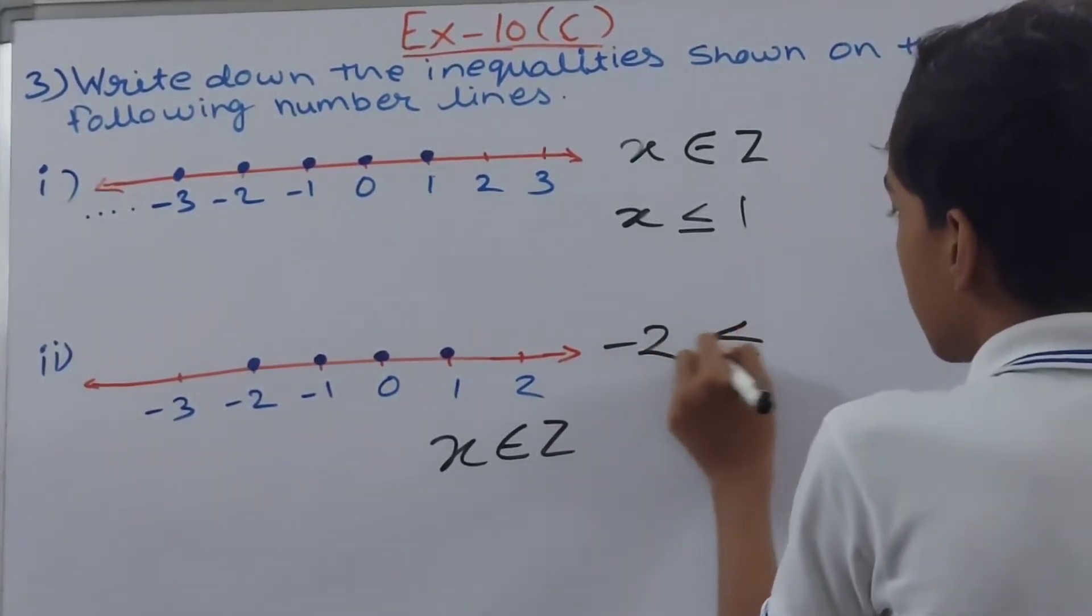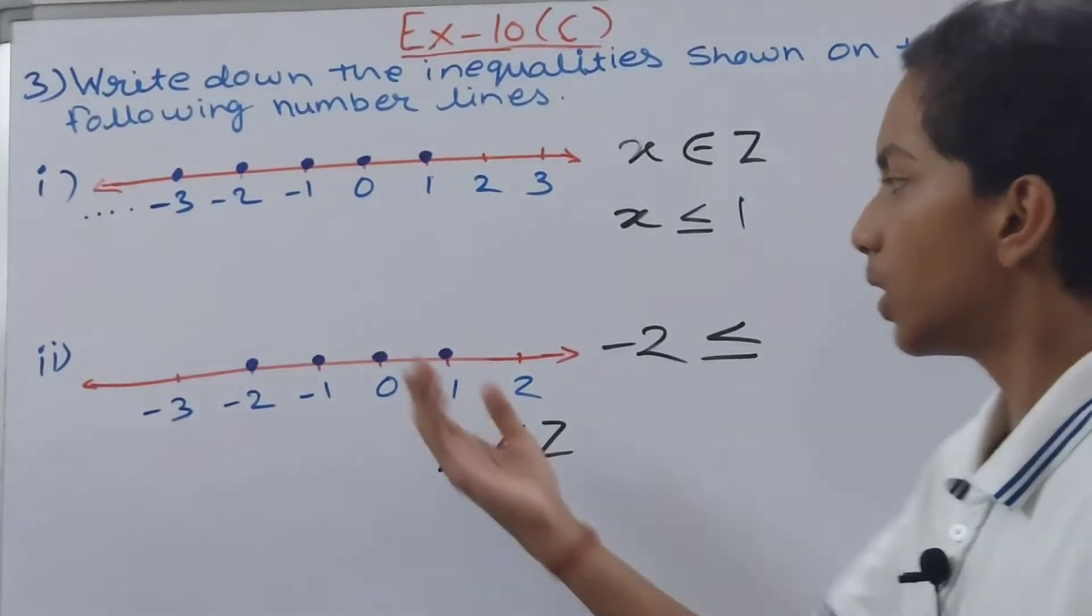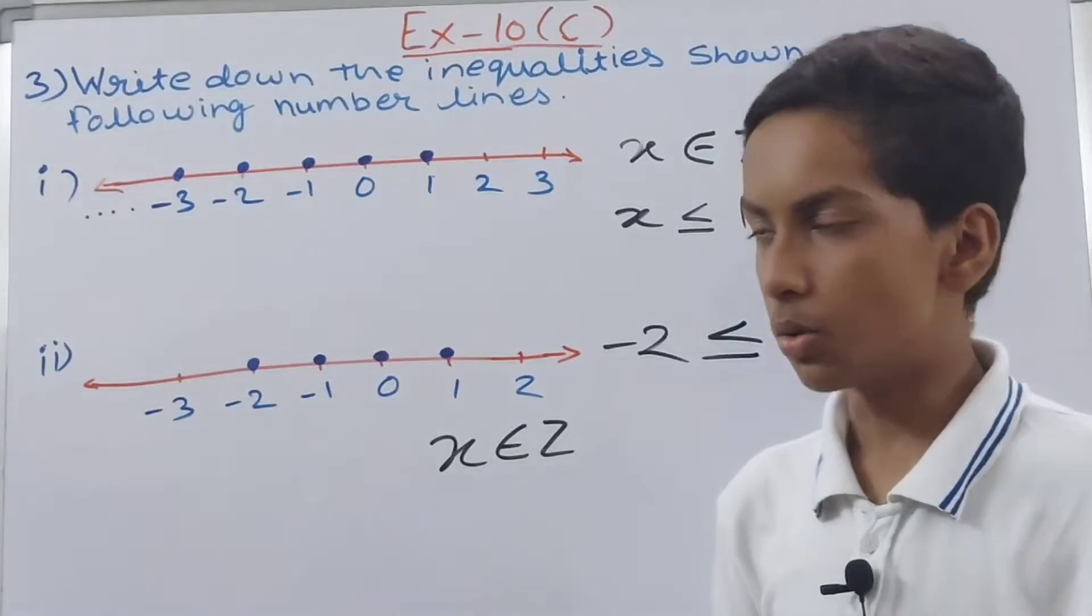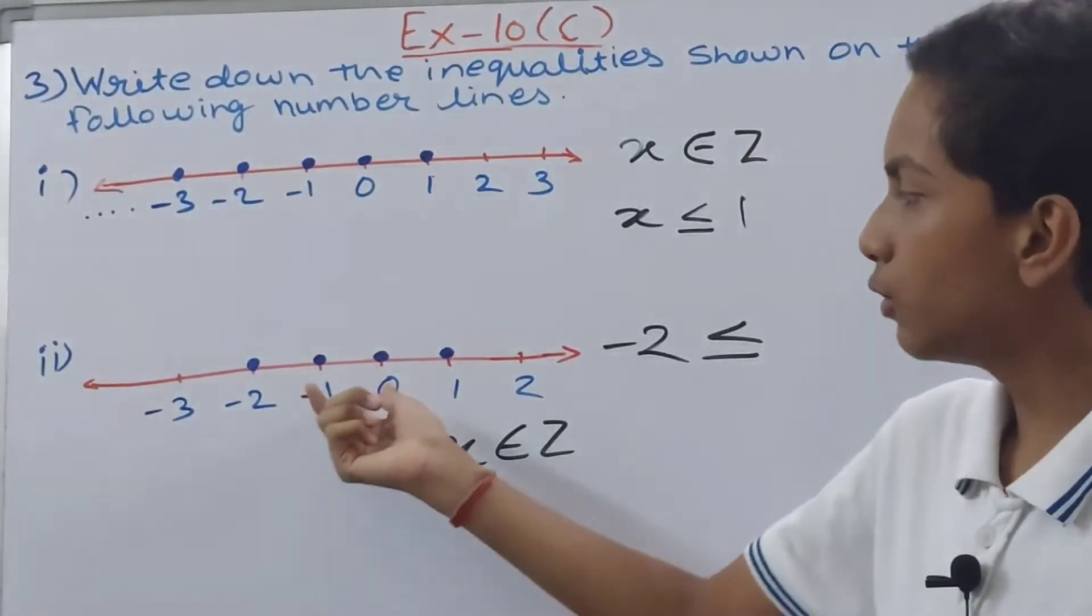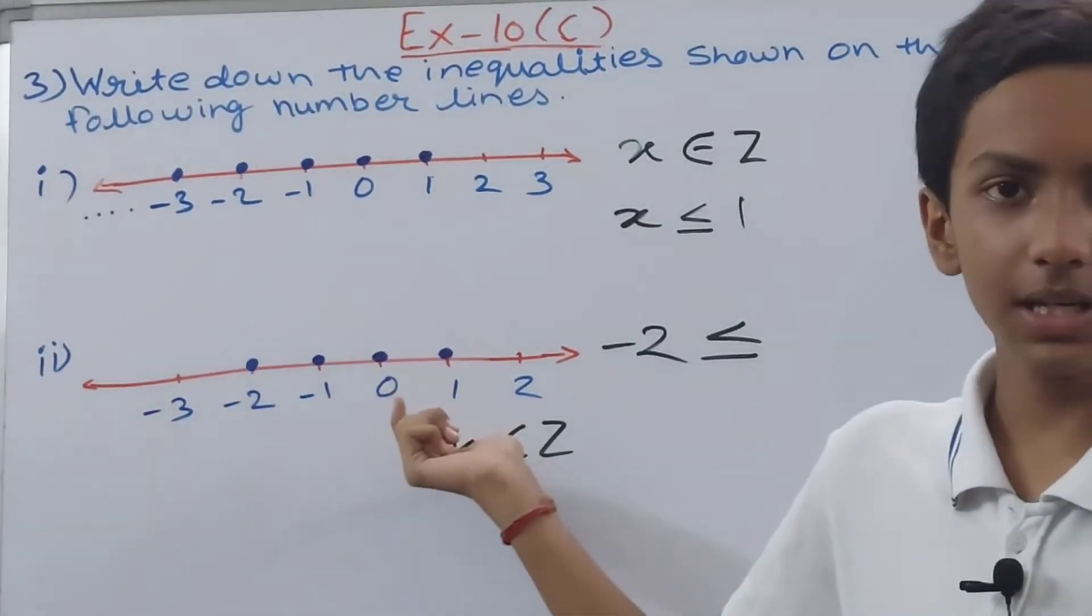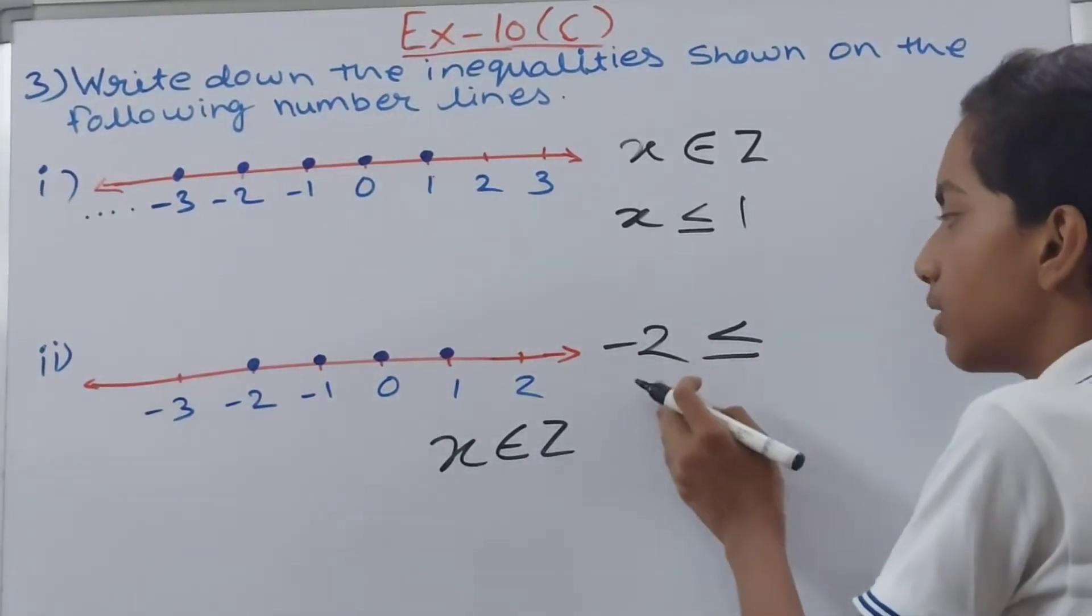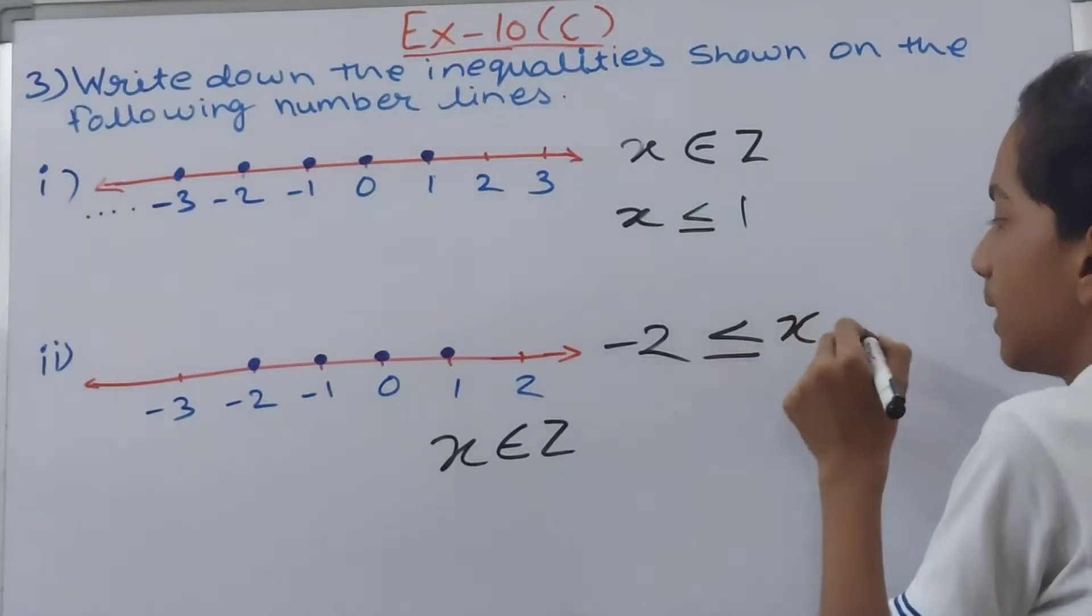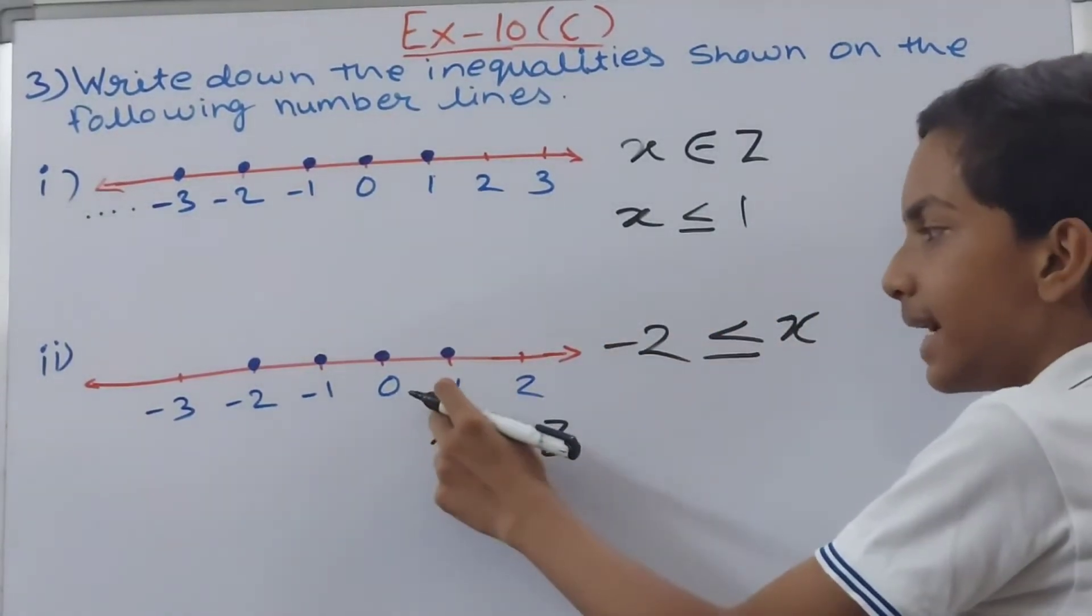Now -2 is less than or equal to... why am I writing this? Because these numbers which are after -2 are more than -2 and they have value more than -2 which is the value of x. So this means -2 has value less than x, so x.